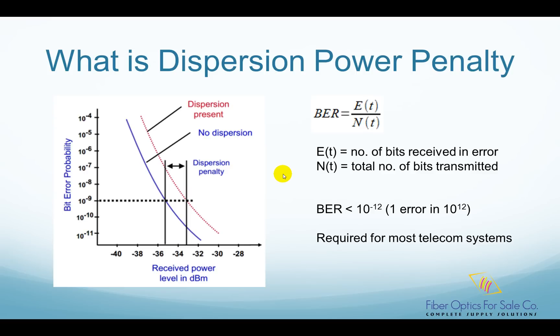This graph clearly shows this phenomenon. The y-axis is the bit error ratio. The x-axis is the received power. Two curves are shown.